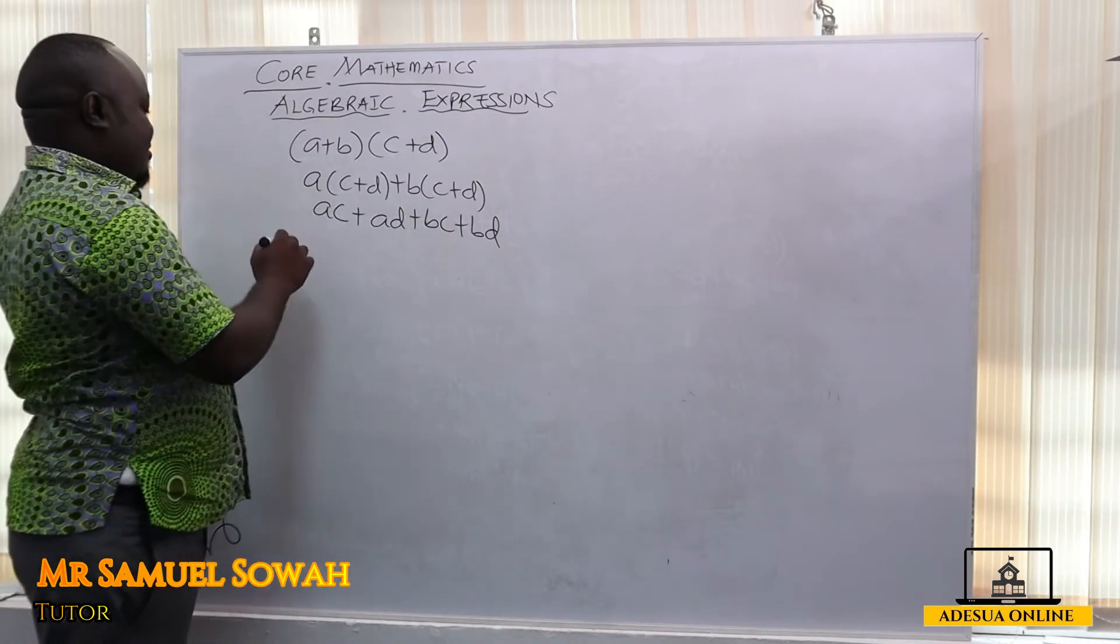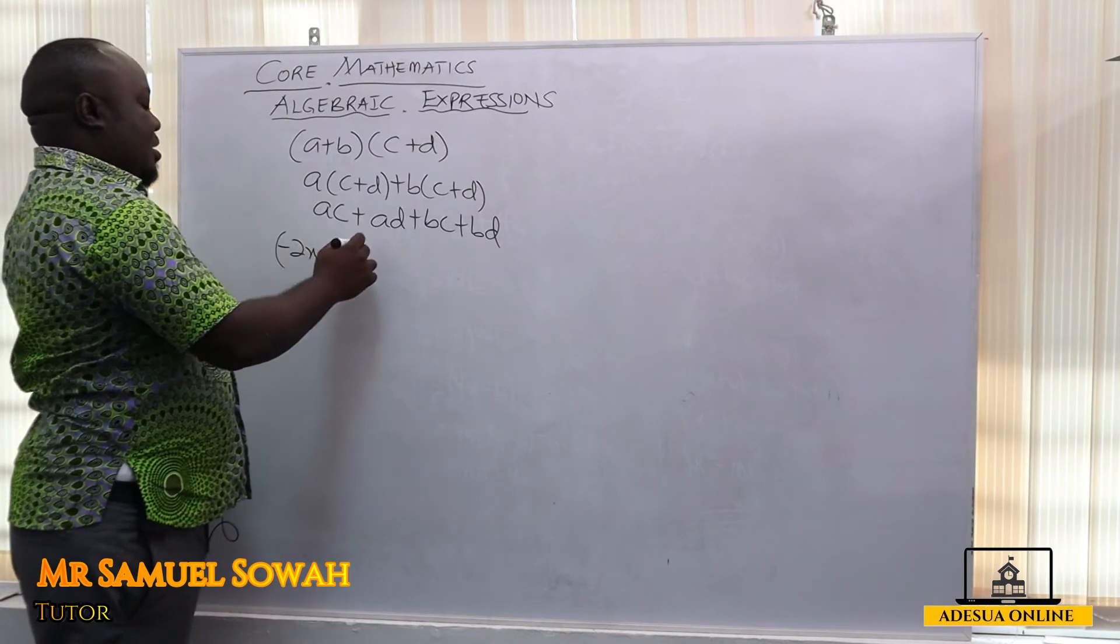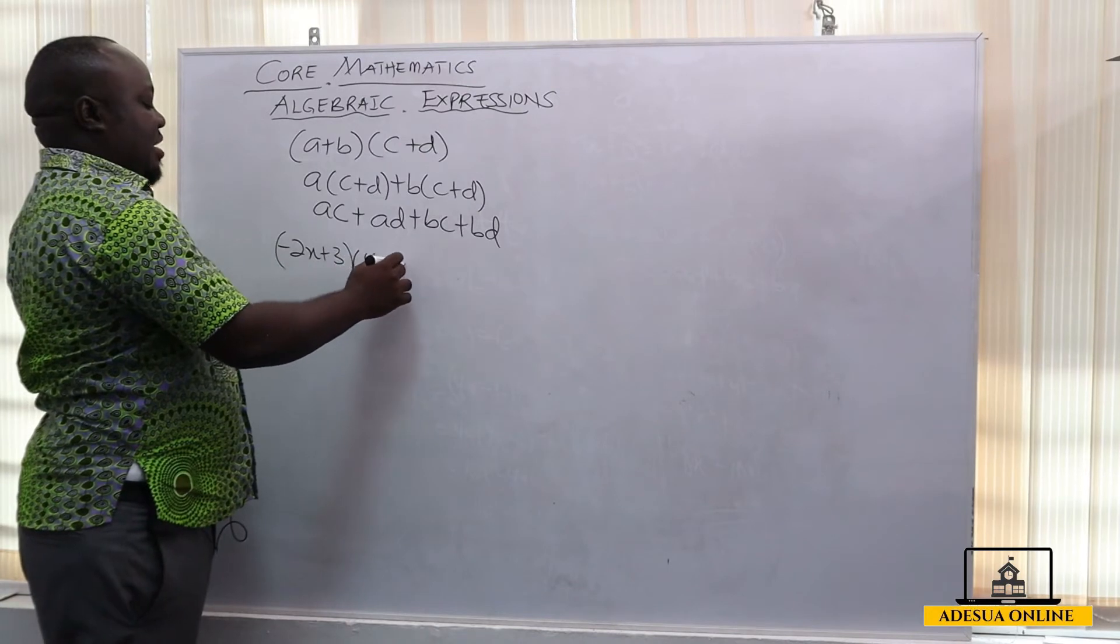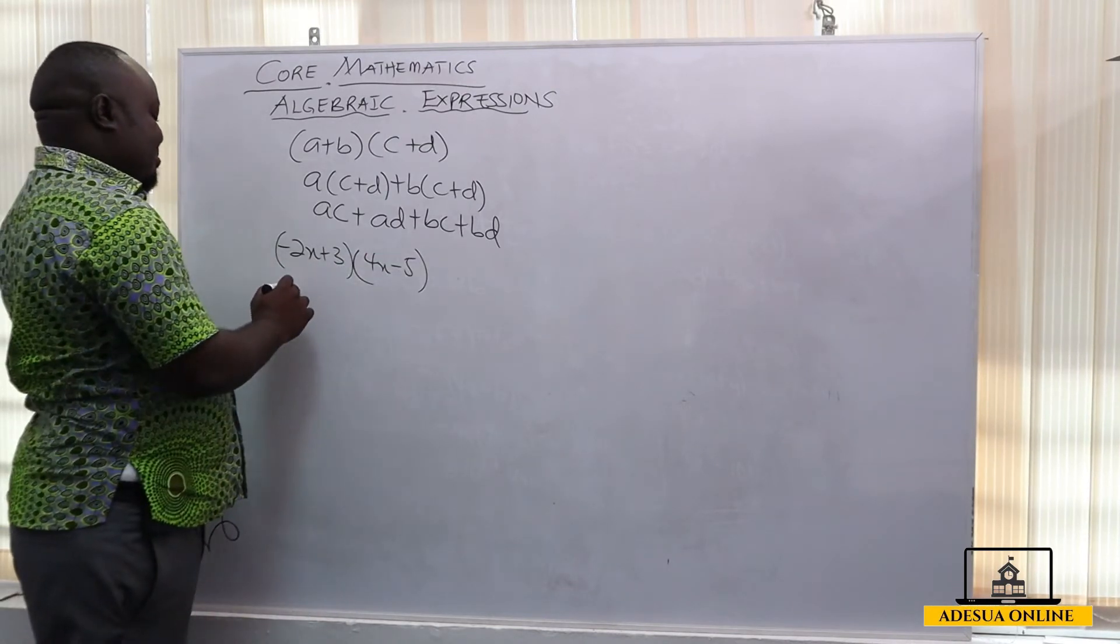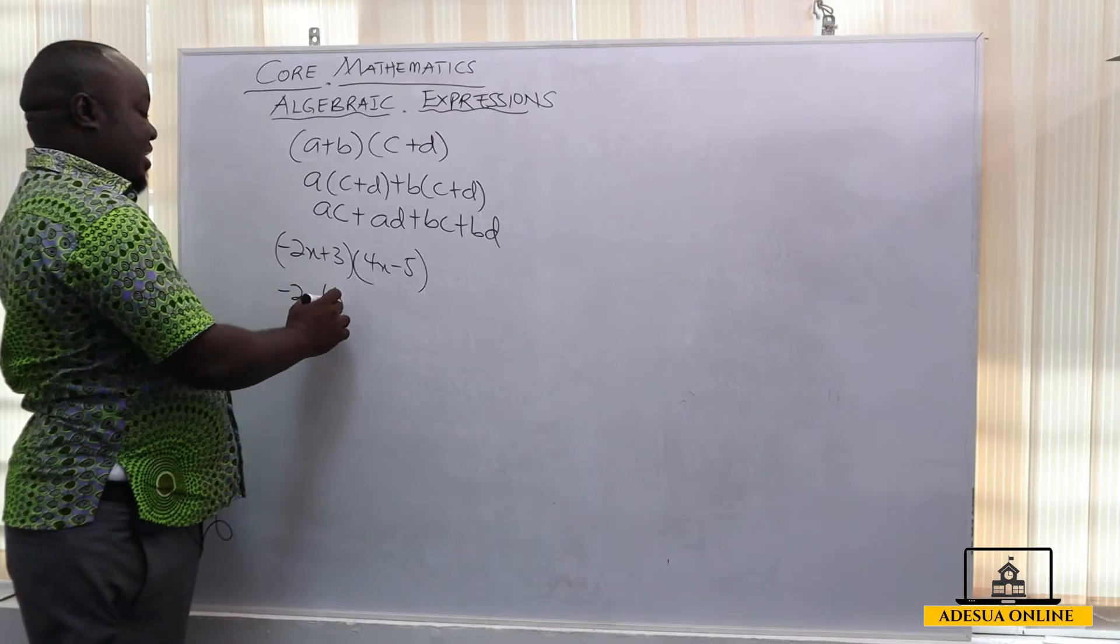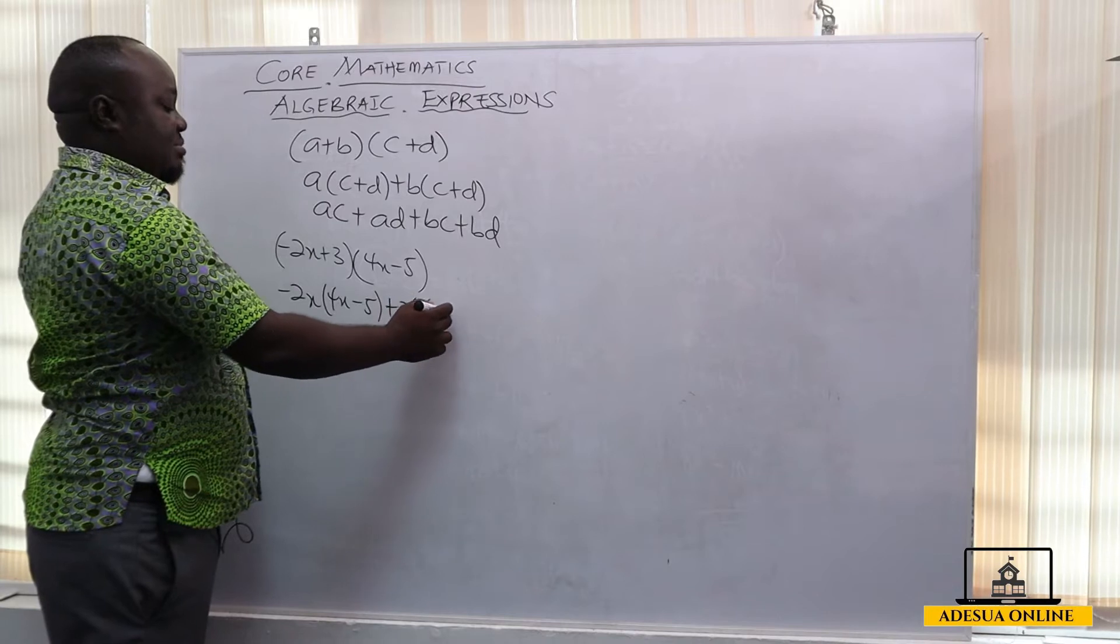So assuming I have minus 2x plus 3 and then I have 4x minus 5 and I want to expand this. This becomes minus 2x into 4x minus 5 and then plus 3 into 4x minus 5.